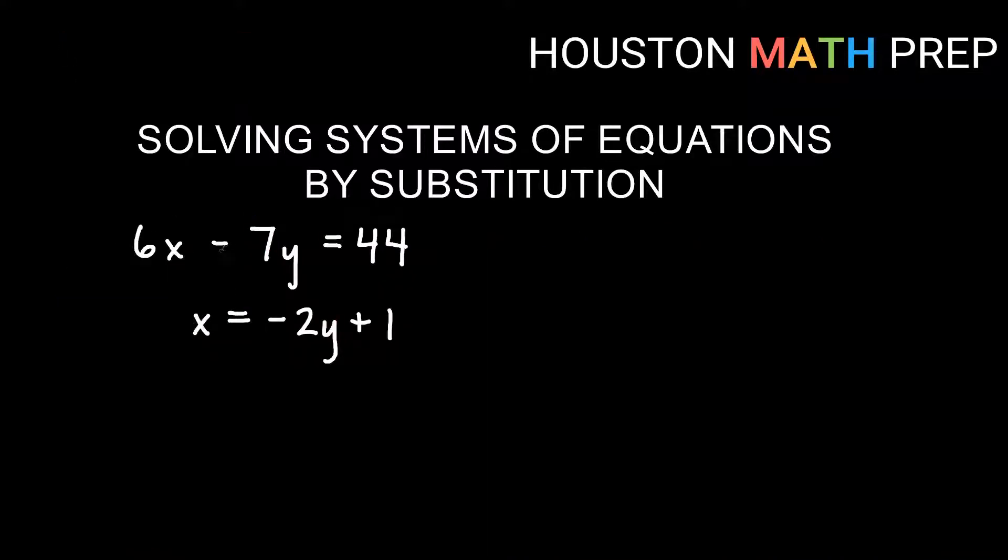All right just something to keep in mind. Let's do another one. So here I have 6x minus 7y equals 44. My second equation is x equals negative 2y plus 1. So in this problem we have a substitution set up for x. I can replace x with this negative 2y plus 1. So what we're going to do is take this negative 2y plus 1 and put it in for x in the other equation. Okay so basically this second equation if you want to think of it, it's saying replace x with negative 2y plus 1. So that's what we're doing in the first one. So let's do that.